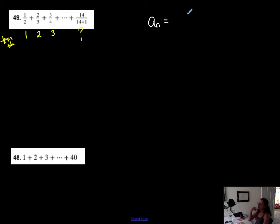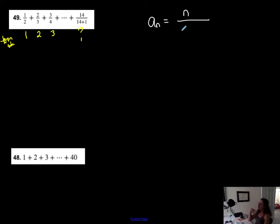So a_n equals n over something. If I want the third term, I plug in 3 for n, which gives a numerator of 3 — that matches. Now checking the denominator: the denominator looks like it's one more than the term number. I initially tried n minus 1, but plugging in 3 gave me 2 on the bottom, which didn't match. So I need n plus 1.